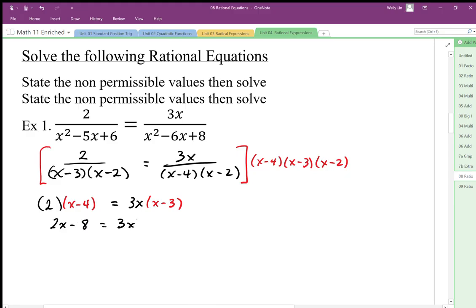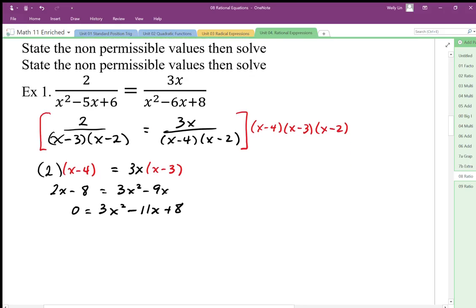I end up with 3x squared minus 9x so I'm going to solve this as a quadratic equation. So I'm going to subtract 2x from both sides add 8 to both sides and I'm going to factor that and solve it looks like that is factorable.